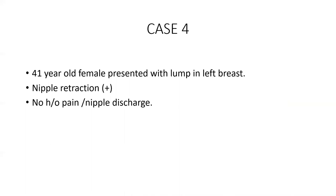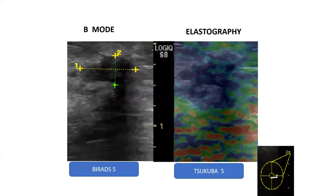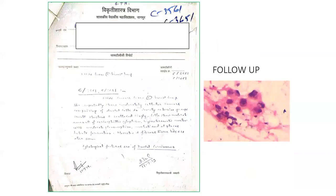Case 4: a 40-year-old female presented with a lump in the left breast and nipple retraction, with no history of pain. Ultrasound showed an irregular, ill-defined hypoechoic lesion in the retroareolar region of the left breast with irregular margins, appearing taller than wider — assigned BIRADS 5. On elastography, the lesion and adjacent tissues appeared homogeneously blue with no deformation throughout the entire region — assigned a score of 5, indicating high risk of malignancy. Follow-up confirmed ductal carcinoma.